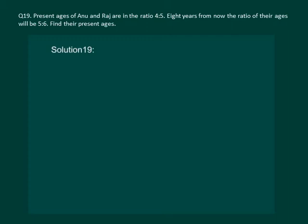So according to the question, present ages of Anuj is to Raj is 4 is to 5. That means if present age of Anuj is 4x, then present age of Raj will be 5x.